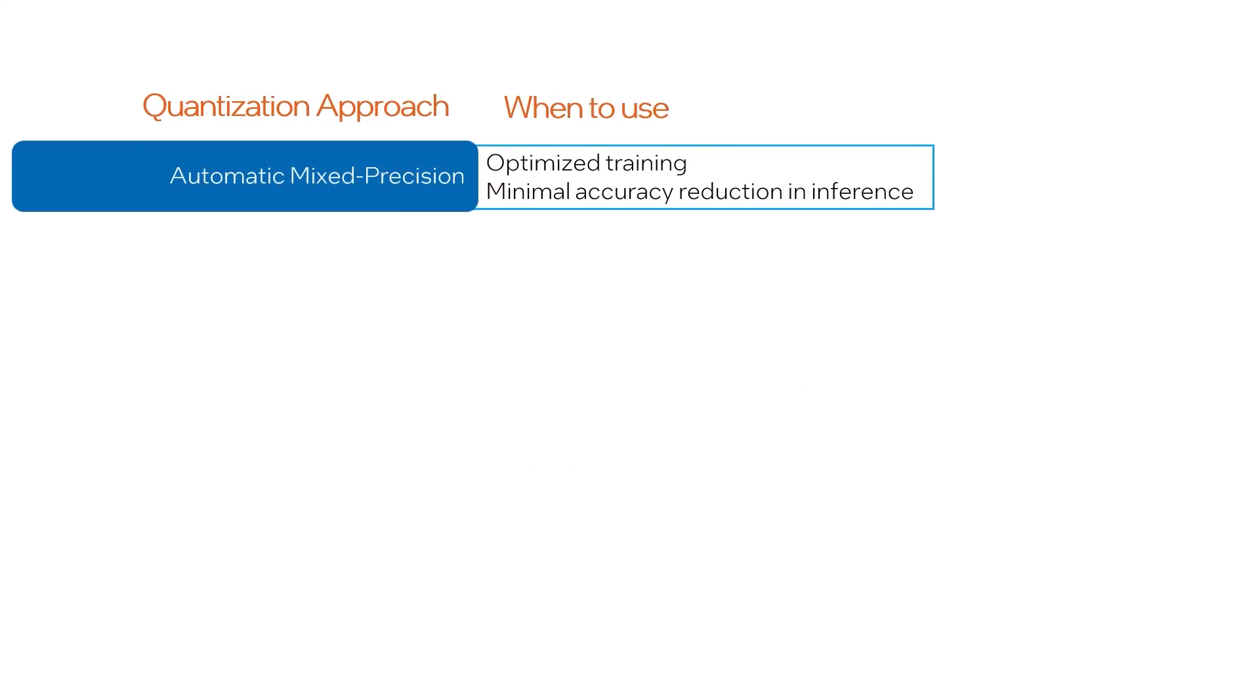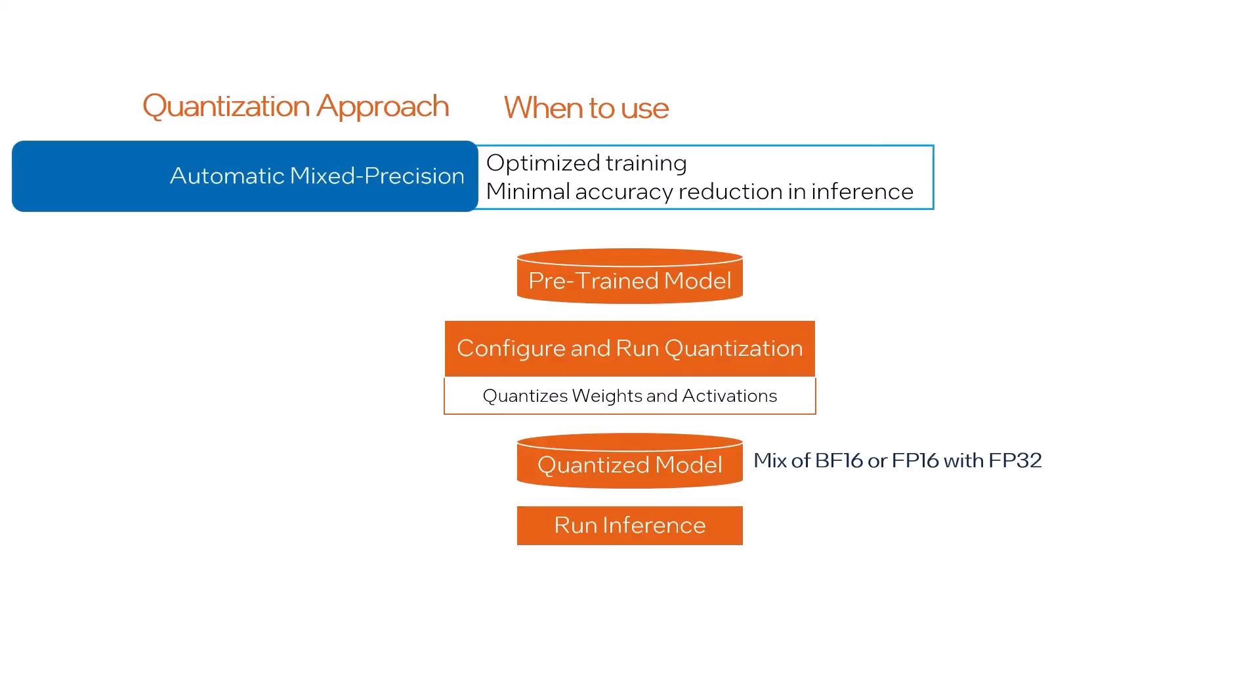Finally, mixed precision is used more in training because it maintains good enough floating point accuracy while optimizing the model, increasing your training capacity. But it can be a really simple way to achieve some model optimization during inference without much effect on accuracy.